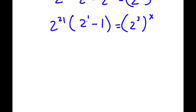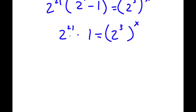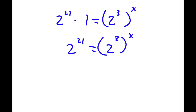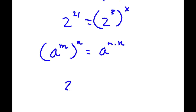Now 2 to the power of 1 is 2, and 2 minus 1 is 1. So I have 2 to the power of 21 times 1, which is simply 2 to the power of 21, equal to 2 to the power of 3 to the power of x. Using the rule that a to the power of m to the power of n equals a to the power of m times n, 2 to the power of 3 to the power of x becomes 2 to the power of 3x. So I have 2 to the power of 21 is equal to 2 to the power of 3x.